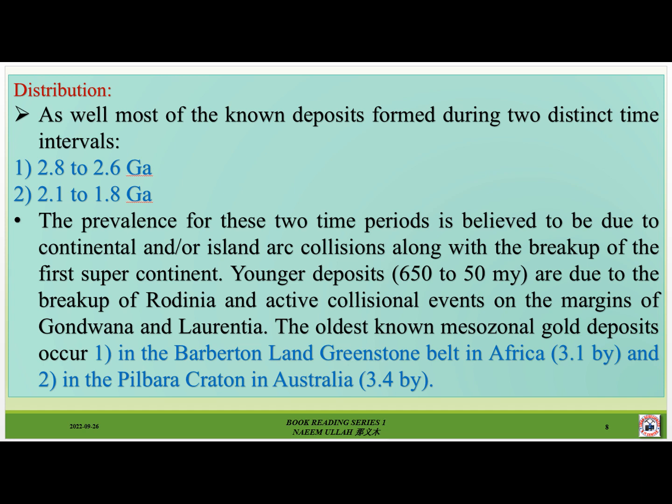The oldest known mesozonal gold deposits occur: number one, in the Barberton Greenstone Belt in Africa, and number two, in the Pilbara Craton in Australia.